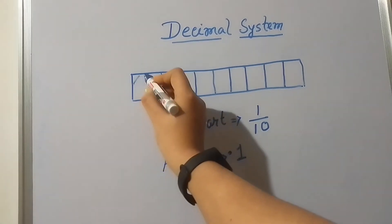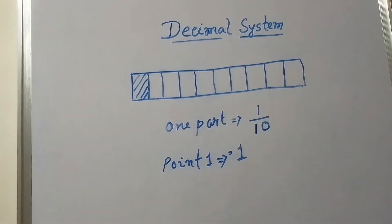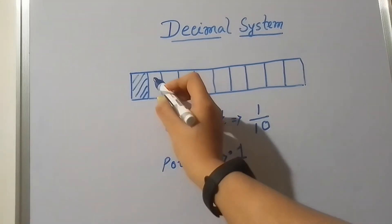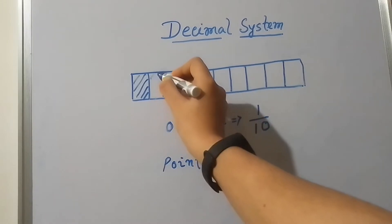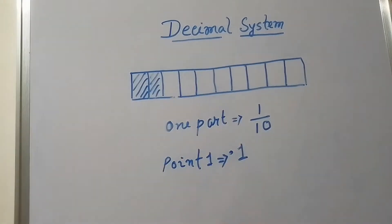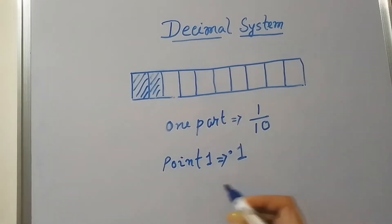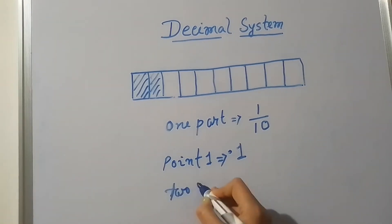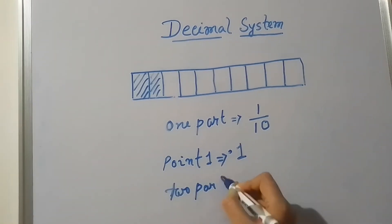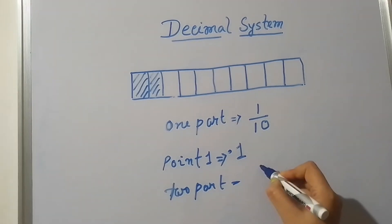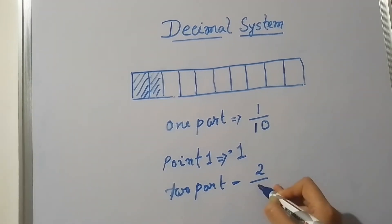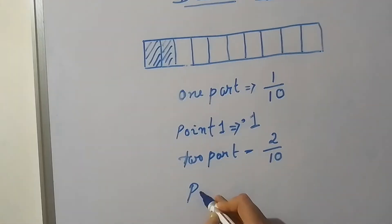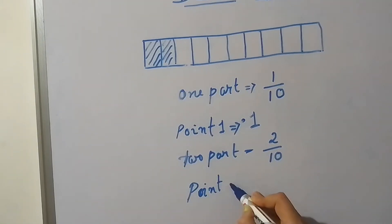Now I am taking two shaded parts of the strip and let's see how I will convert it into decimal form. Two shaded parts of the strip we can write as 2 by 10 or 2 tenths, and the decimal form of this fraction will be point 2.